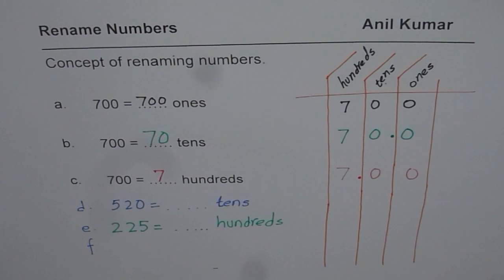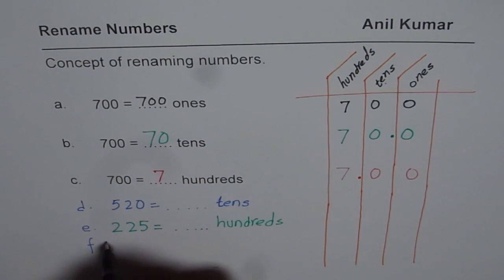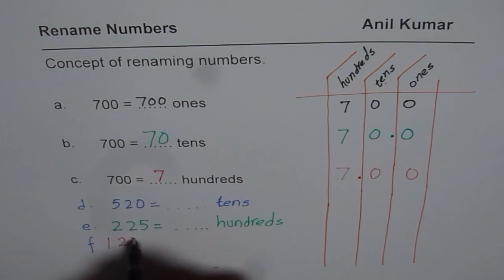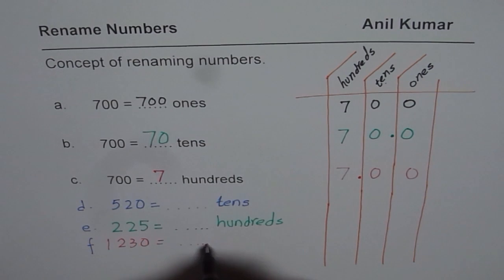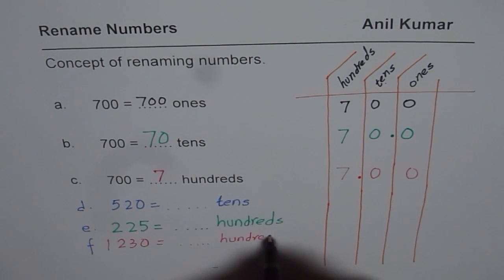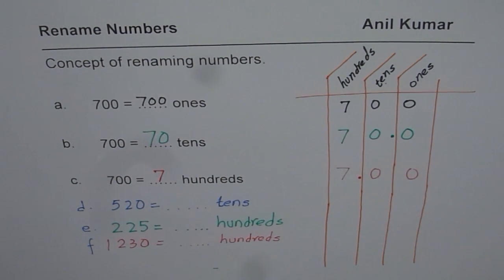Now one more number for more practice — I'll take a bigger number this time. The number is 1230. Write this as hundreds. That is the exercise for you — how will you do it? Let's begin.